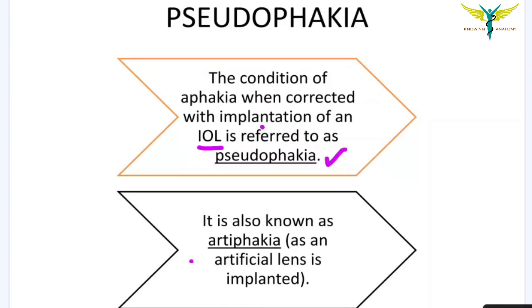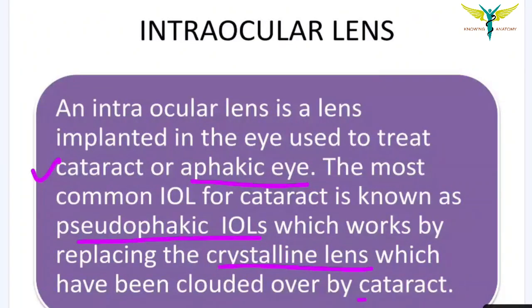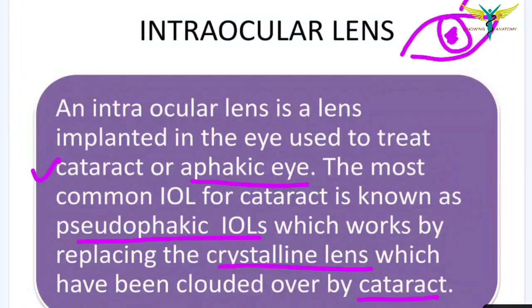An intraocular lens is a lens implanted in the eye, used to treat cataract or aphakic eye. The most common IOL for cataract is known as the pseudophakic IOL. This works by replacing the crystalline lens which has been clouded over by cataract. The crystalline lens is replaced with the intraocular lens, so this is called a pseudophakic IOL.